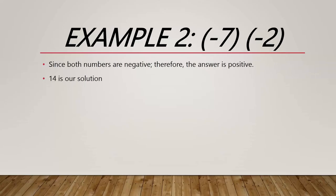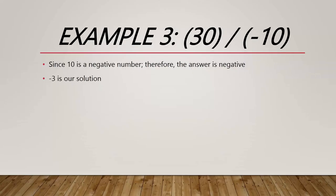Negative 7 times negative 2. We see that the two numbers have a negative sign, that will mean the final answer will be positive. Therefore, 14 is the solution to this multiplication.